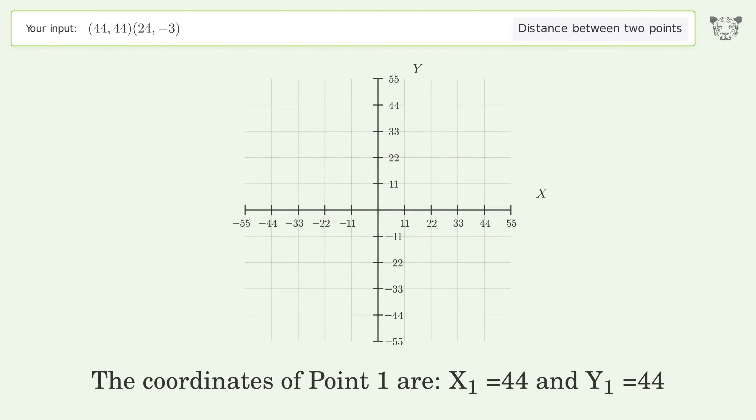The coordinates of point one are x1 equals 44 and y1 equals 44. The coordinates of point two are x2 equals 24 and y2 equals negative 3.